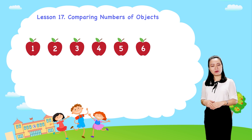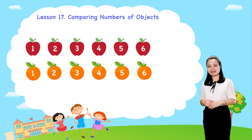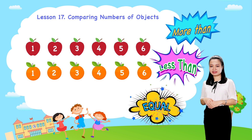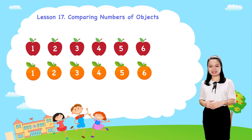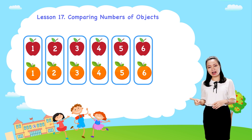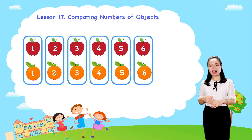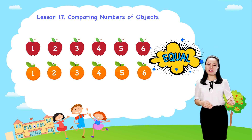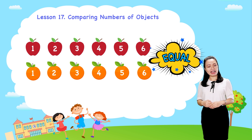Next, we have six oranges. Is the number of apples more than, less than, or equal to the number of oranges? Let's pair an apple with an orange. Each apple is paired with an orange because there is an equal number of apples and oranges. So, the number of apples is equal to the number of oranges.